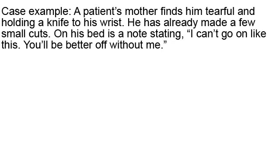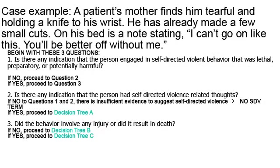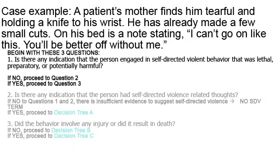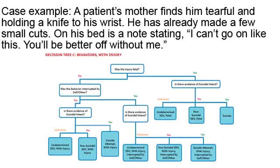Let's look at a second case example. A patient finds himself tearful and holding a knife to his wrist. He's already made a few small cuts. On his bed is a note stating, 'I can't go on like this, you'll be better off without me.' Is there any indication that the person engaged in self-directed violent behavior, either preparatory or potentially harmful? The answer is yes, so we'll proceed to question three: did the behavior involve any injury? Yes — he'd made a few small cuts. So we proceed to decision tree C.